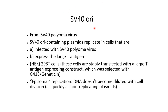The SV40 origin site is from SV40 polyoma virus. SV40 origin-containing plasmids replicate in cells that are infected with SV40 polyoma virus expressing the large T antigen. HEK 293T cells are stably transfected with a large T antigen-expressing construct, which was selected with G418 or geneticin. Episomal replication means DNA does not become diluted with cell division as quickly as a non-replicating plasmid.